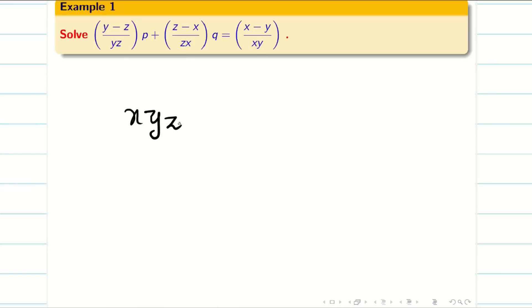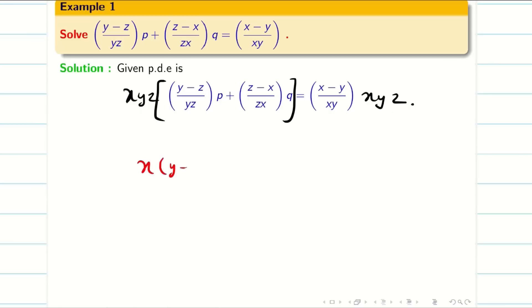Better if I multiply by xyz on both sides, my problem will be simplified. Multiplying by xyz gives: x(y-z)p + y(z-x)q = z(x-y). This is better compared to the original equation.